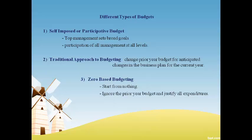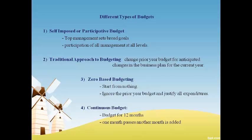The third type is called zero-based budgeting, where management starts from the ground up and determines what resources are needed without considering prior year cost or budget. A continuous budget covers a rolling 12 months — as one month passes, another month is added, and the budget is always a forecast of the next 12 months. The most appropriate type of budget depends on the growth stage of the business and how often the operations of the company change.